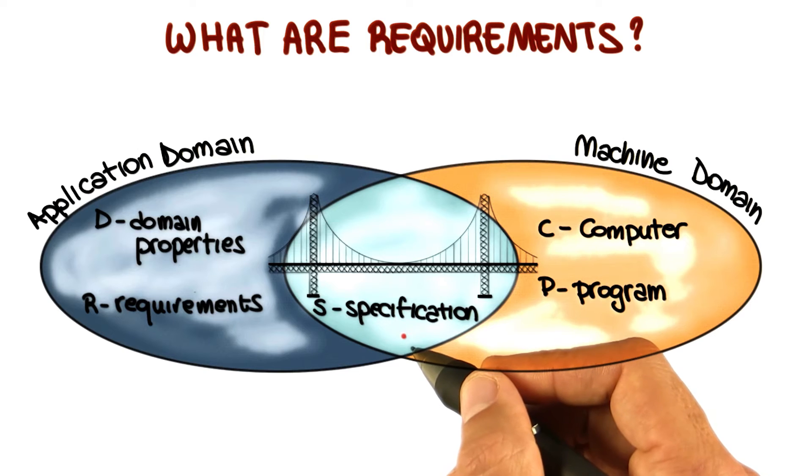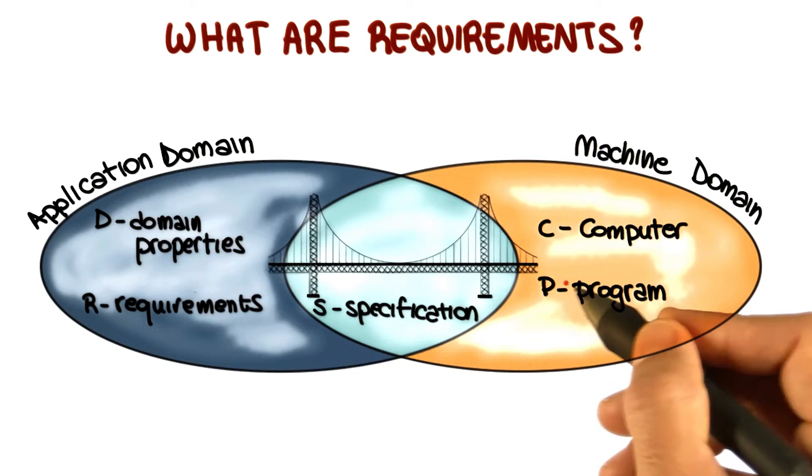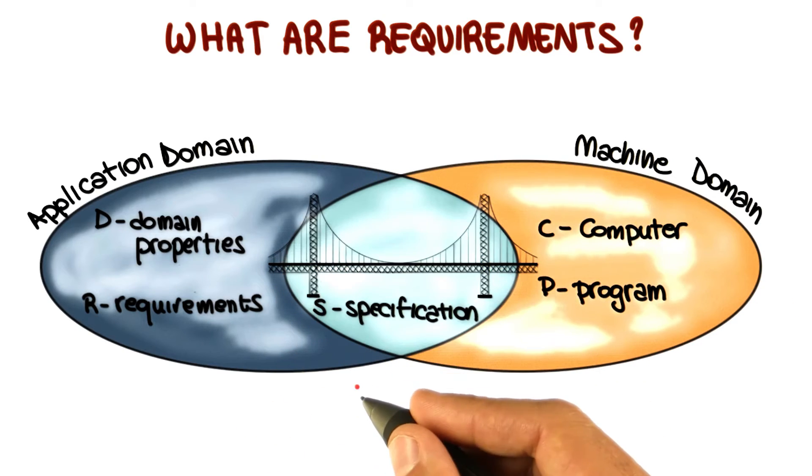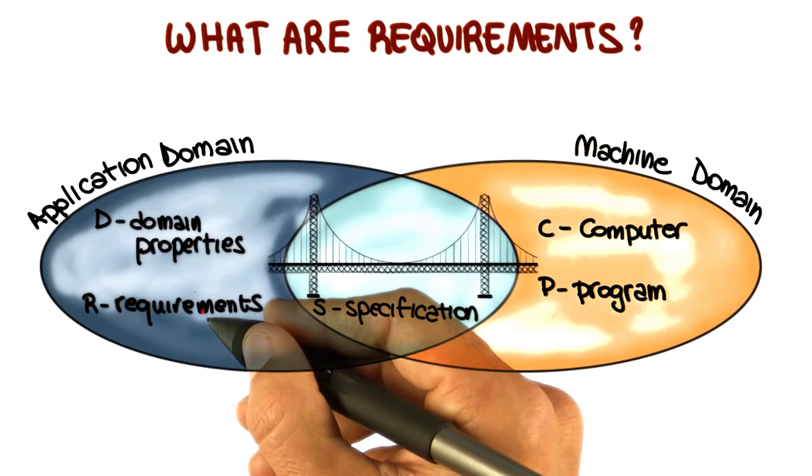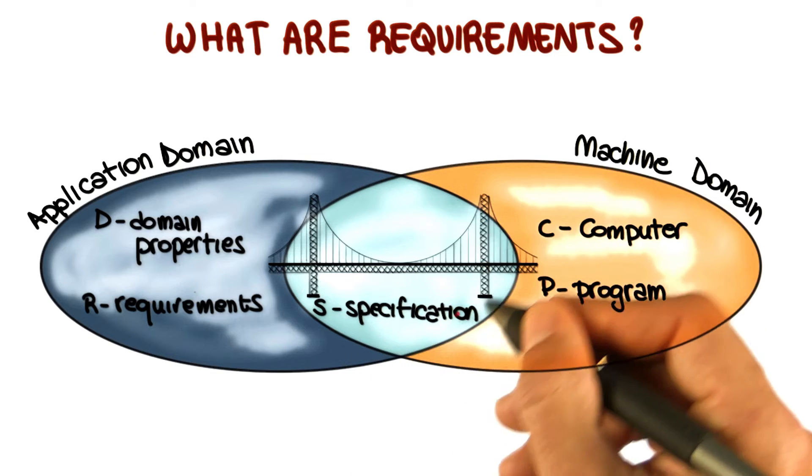We can think about two main kinds of phenomena. The first one are events in the real world that the machine can directly sense. For example, a button being pushed or a sensor being activated. These are events that happen here, but that the machine can detect.